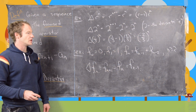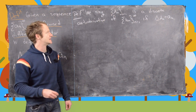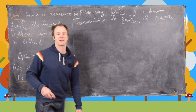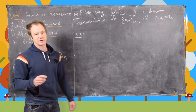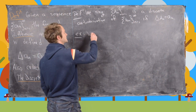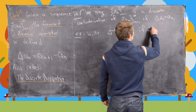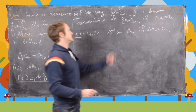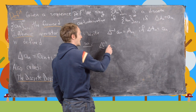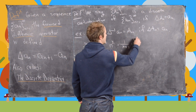Now we can define the notion of a discrete antiderivative. We say the sequence A_n is a discrete antiderivative of a_n if the forward difference operator applied to A_n equals a_n. We can write the inverse of the delta operator: the discrete antiderivative of a_n equals A_n if delta A_n equals a_n.